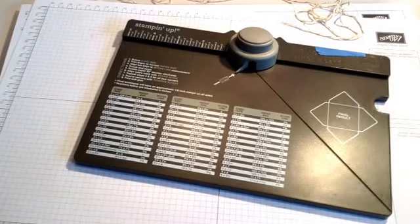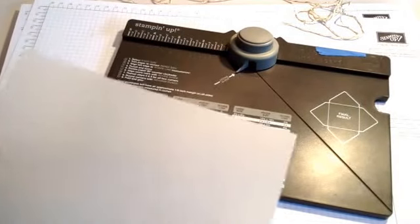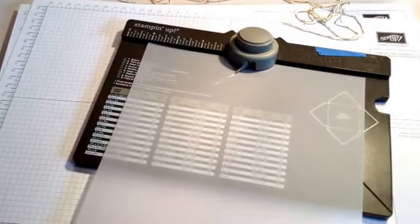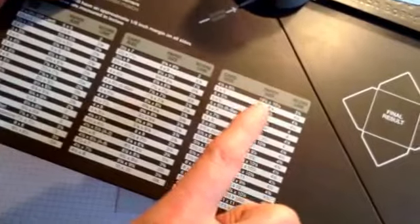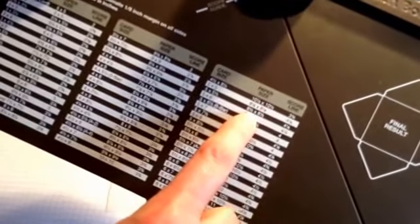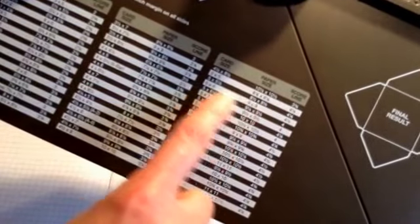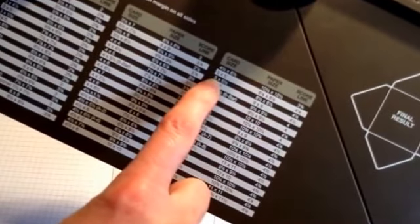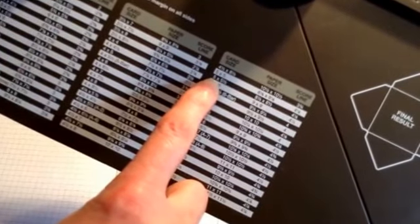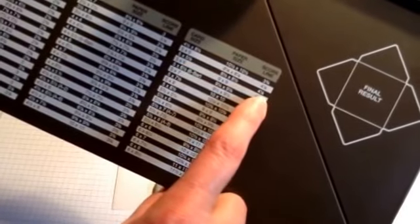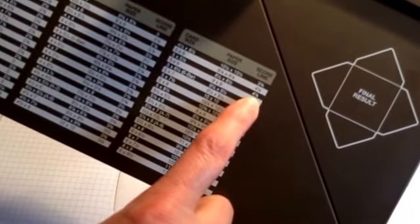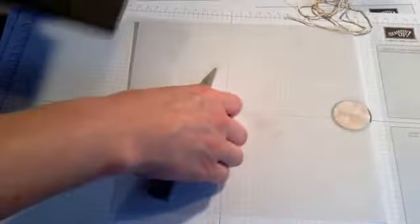We use our cardstock vellum which is in the main catalog, item number 101-856. The largest square that I could get out of the sheet was 8.5, so I went to the punch board and I looked down here in the larger envelopes. I found 8.5 by 8.5 under the paper size, which gives me an envelope that is 5 by 5.5, and it also gives you the score line of 4 and 1/8.